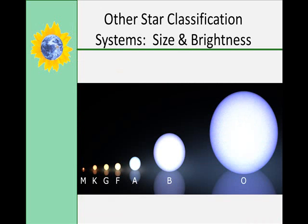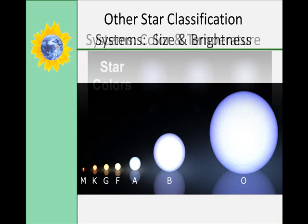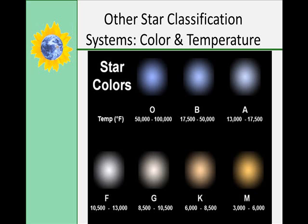We can also use size and brightness to classify stars. There are bright supergiants, supergiants, bright giants, giants, subgiants, main sequence stars, and dwarfs. Star colors will also indicate the temperature that the star is burning at. It goes from blue to red — blue, white, yellow, orange, and red — from the highest temperatures to the lowest temperatures.